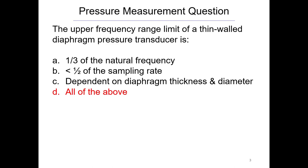We just learned that the upper limit of a thin-wall diaphragm pressure transducer is one-third of the natural frequency — that's just the property of that thin-wall diaphragm. We want to keep well below the natural frequency so it doesn't tear itself apart, giving us an even response. B is also true — that relates to what we learned about sampling rates. And C is something we learned recently: it's dependent on the diaphragm thickness and diameter.